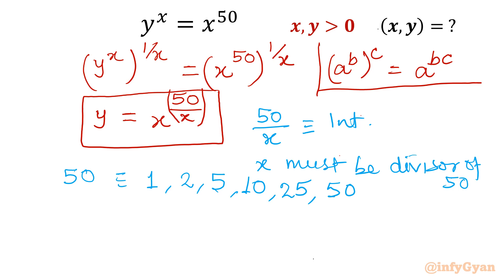So what we are going to find out, we will find the six values and we will check. Let me write here x, then I will write y = x^(50/x), and then we will write our case: 1, 2, 5, 10, 25, 50. Let's put the value x = 1. So it will become 1 raised to power 50/1, that means 1. So the ordered pair will be (1, 1).